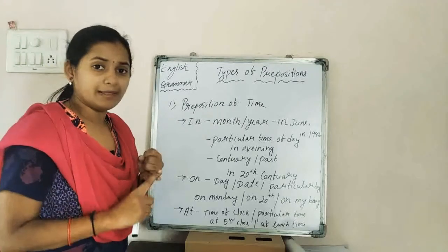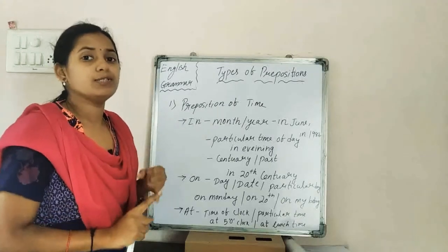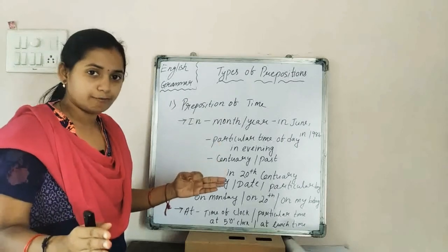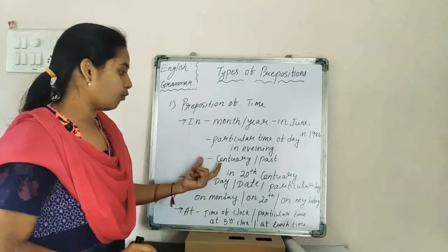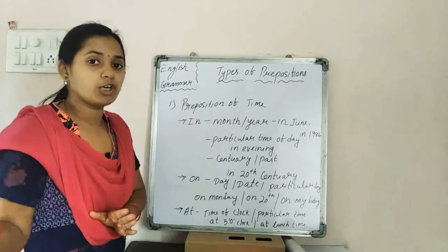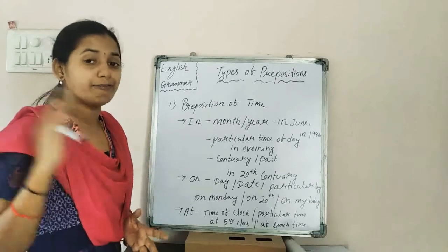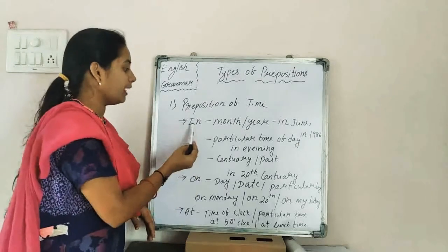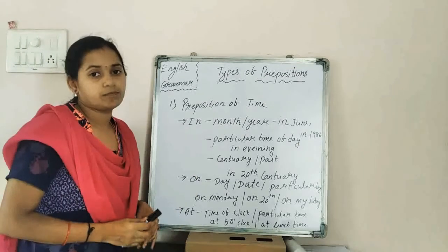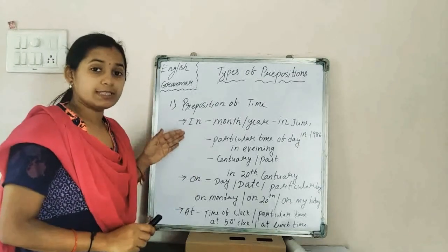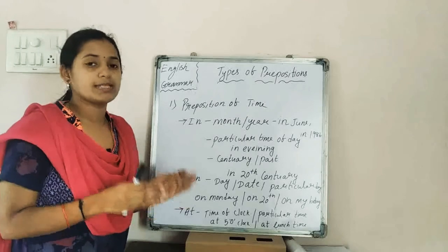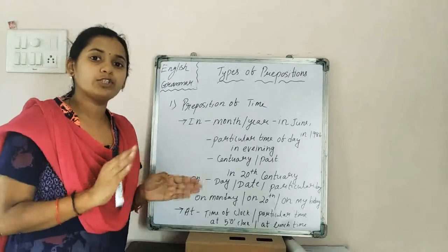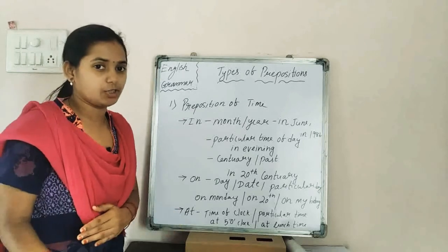So to summarize: 'in' is used for months, for years, for a particular time interval of the day, and when talking about the past or centuries. When discussing preposition of place, the usage of 'in' will change.